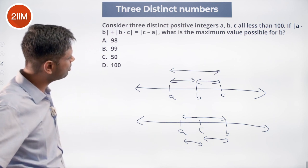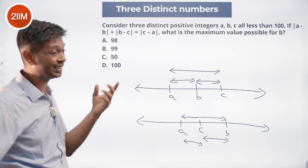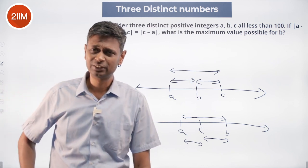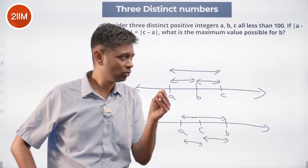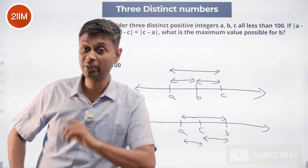So what is the maximum possible value for b? All three are integers, are distinct, and all are less than 100. So all three can only be from 1 to 99. But b is the number in the middle, so it cannot be 99.